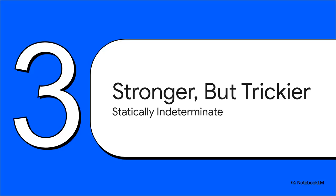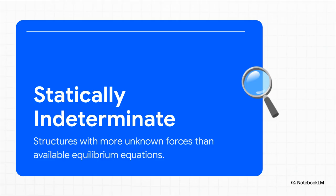Okay. That's the simple stuff. But what happens when engineers design something with more supports than it technically needs to just stand up? Well, something interesting happens. The structure gets a lot stronger, but the puzzle gets way, way trickier. And this is what brings us to the next level, statically indeterminate structures. These are buildings and bridges that have extra or what engineers call redundant supports. And here's the problem. Suddenly, you have more unknown forces than you have equations to solve them. Those three simple equilibrium equations, they're not enough anymore. The basic rules just don't work.